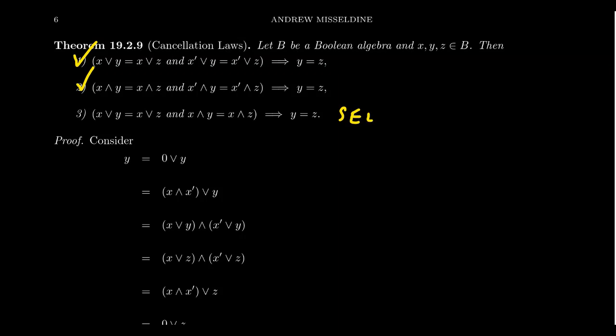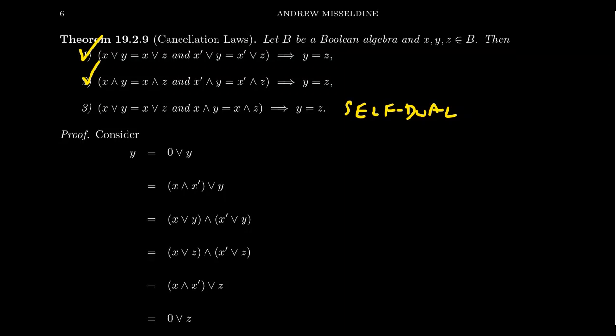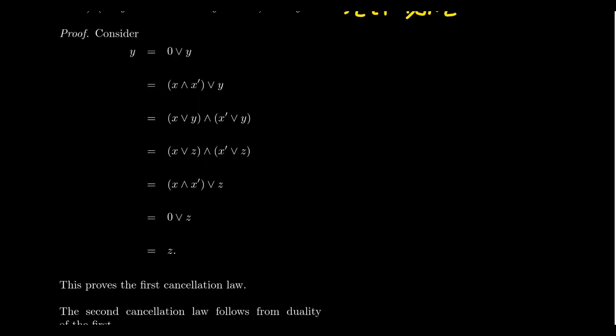The third cancellation law is a self-dual statement — if you swap all joins with meets and meets with joins you get the exact same statement back. Since it is self-dual, it is not the dual of anything else, so we have to prove it separately. The proof will be very similar to what we just saw.